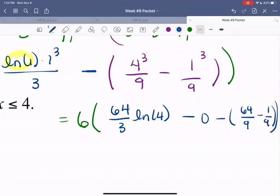We can simplify further. We get 6 times 64 over 3 ln of 4. Now 64 over 9 minus 1 over 9 becomes 63 over 9, which we can check if it simplifies. 63 divided by 9 is 7.